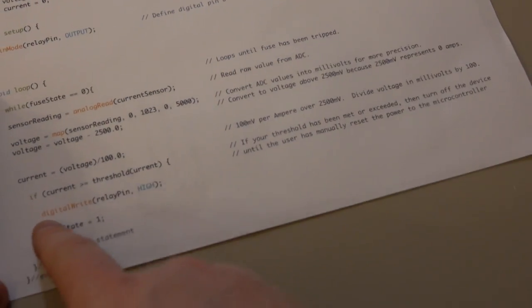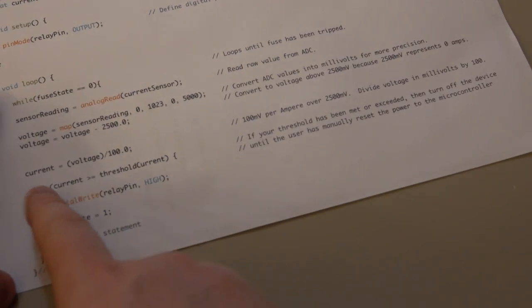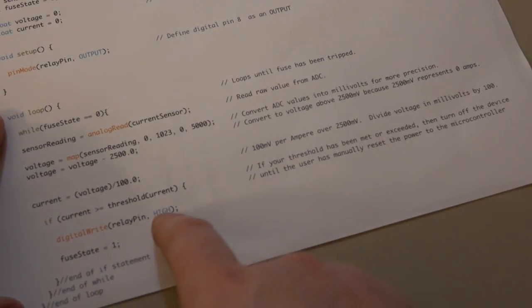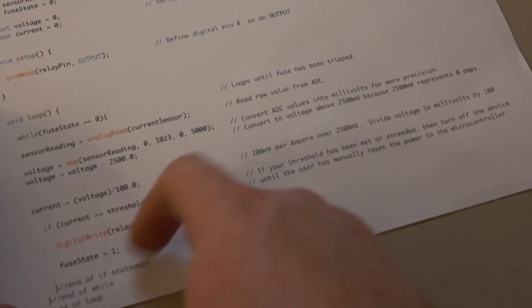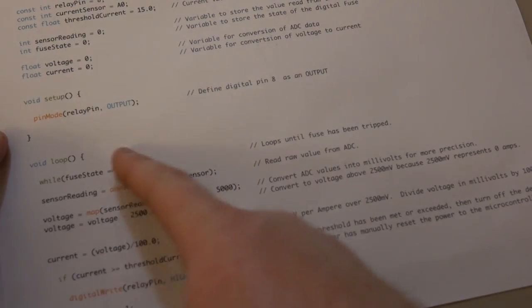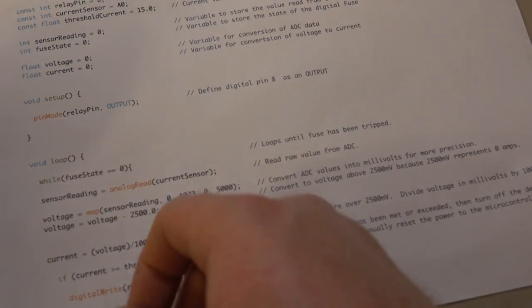So then we have an if statement. If the current is greater than or equal to the threshold current we set up here, digital write relay pin high. And then the fuse state, we're going to force that to 1. So basically the program is over and it's not going to do anything else until the power is restored.